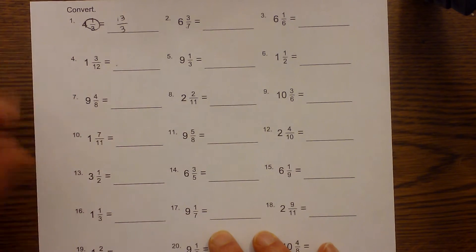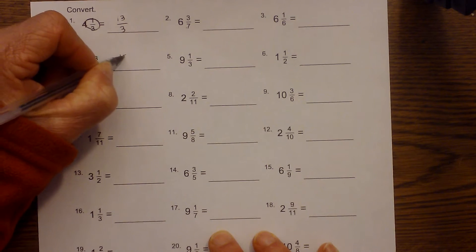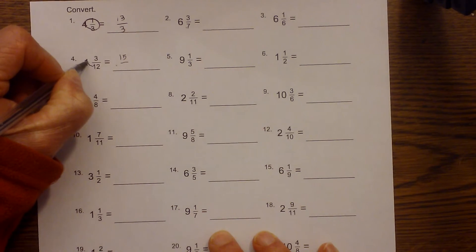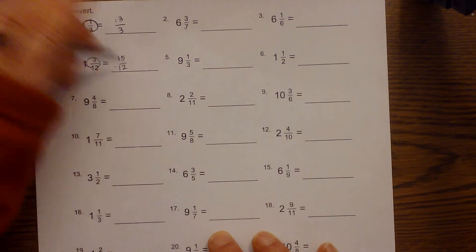So I will show you an example, number 4. Let's do the circle trick. We multiply first, 12 times 1 is 12, and then we add so it is 15. And the 12 goes all the way around back to its original spot, so it is 15 over 12.